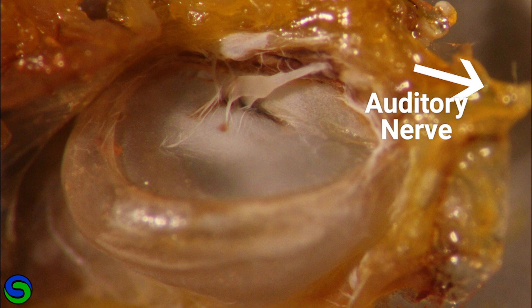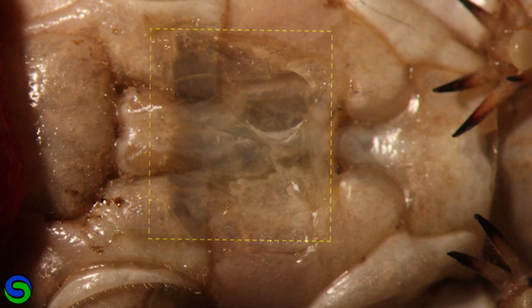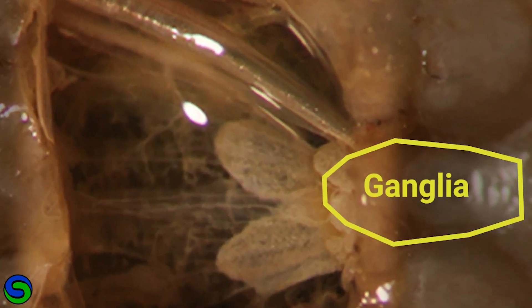To measure the neural firing, I measured the electrical signals traveling along the auditory nerve. The nerve connects to the ganglia on the ventral side of the thorax. Cutting away a small window reveals the tissues underneath. Zooming in for a closer look, the ganglia is mostly hidden, but sticking out slightly.